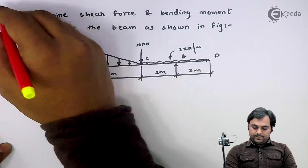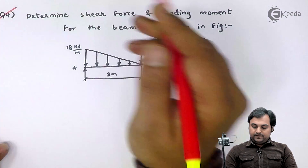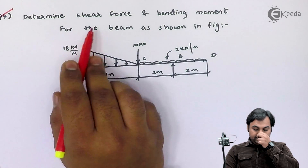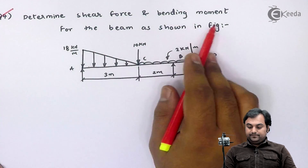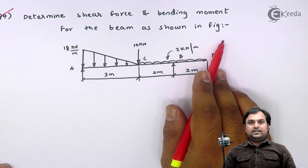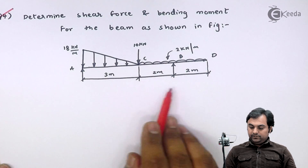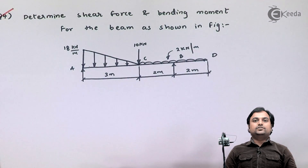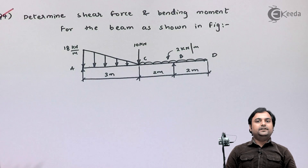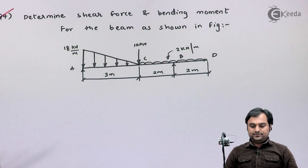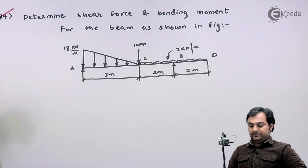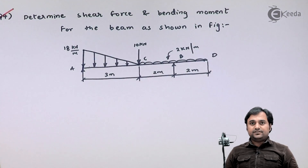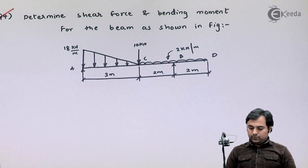Let us take the fourth question. We are given to determine shear force and bending moment for the beam as shown in the figure. We have a diagram and we have to solve this question and draw shear force and bending moment diagrams.